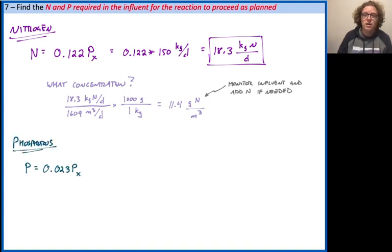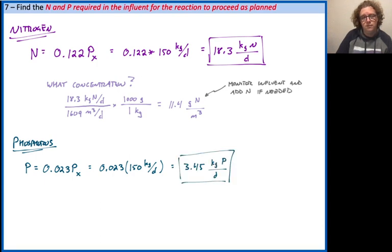Phosphorus works in a very parallel way. Phosphorus demand 0.023 times that sludge production rate. Again, that's an easy calculation, about 3.4 kilograms of phosphorus per day. That'll be required. And by that same strategy as above, we can find a concentration of about 2.1 grams per cubic meter of phosphorus.